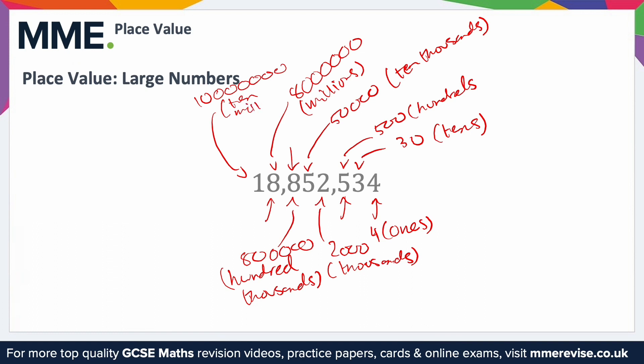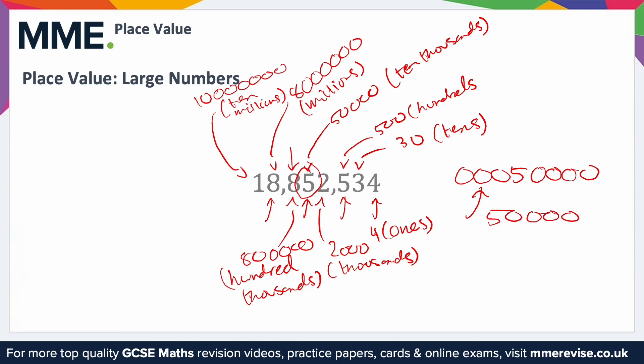The easiest way to find a digit's value is to isolate it by turning everything else into a 0. For example, isolating the 5 gives us 0000050000. We can remove the leading zeros, leaving 50000, so the 5 represents fifty thousand in this case.